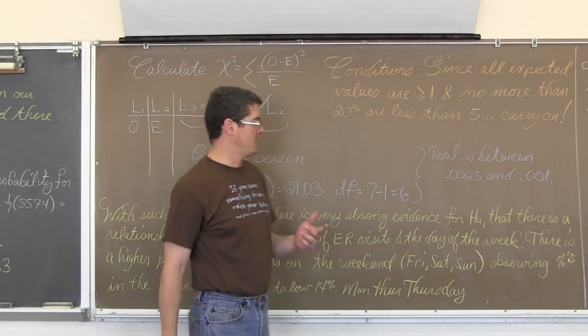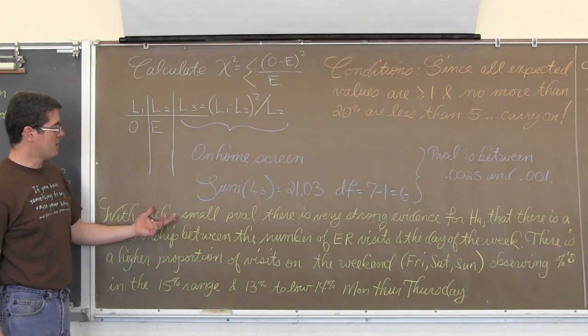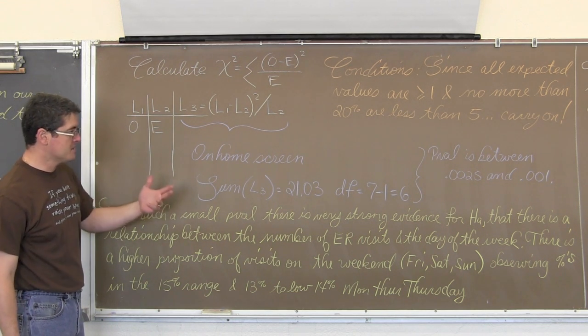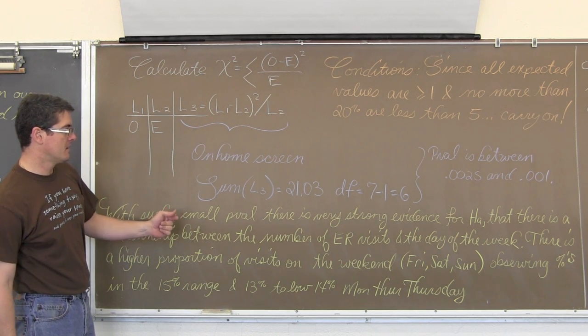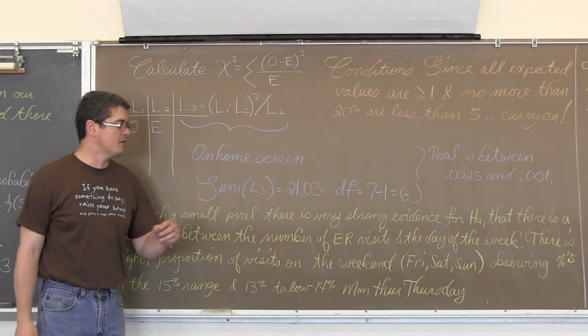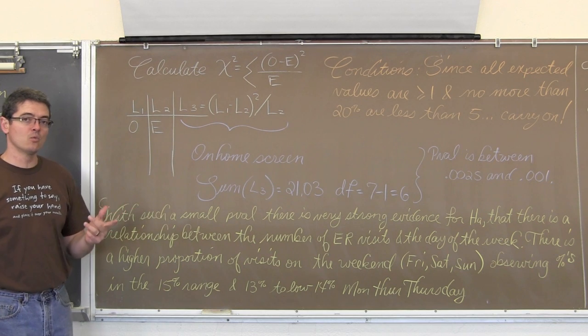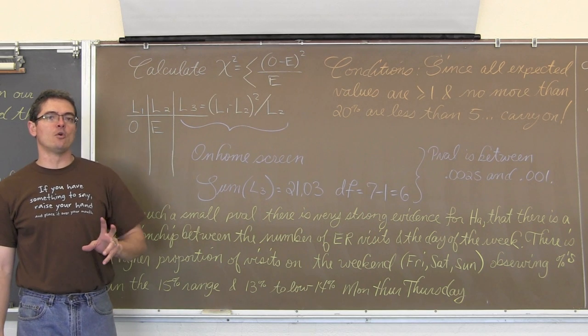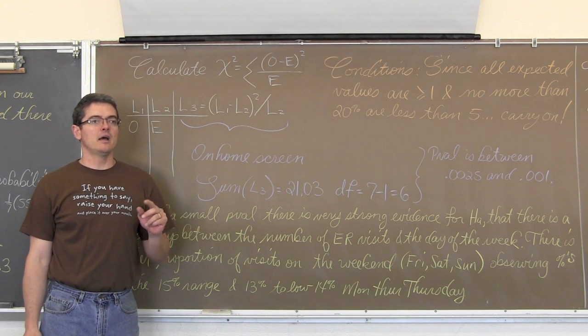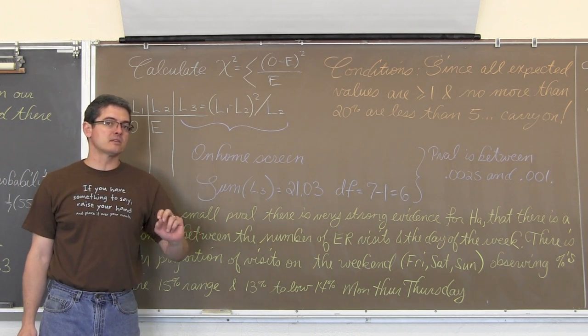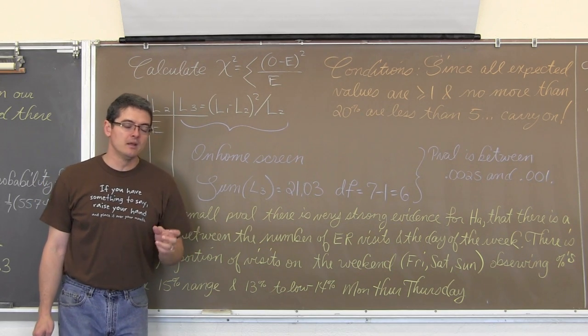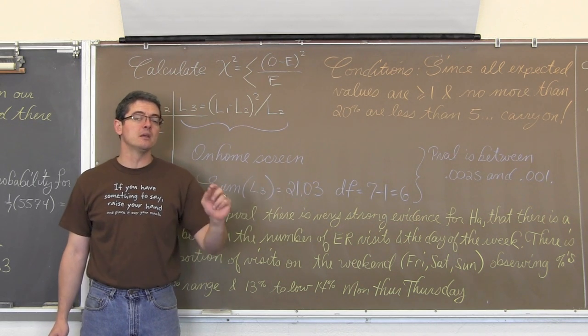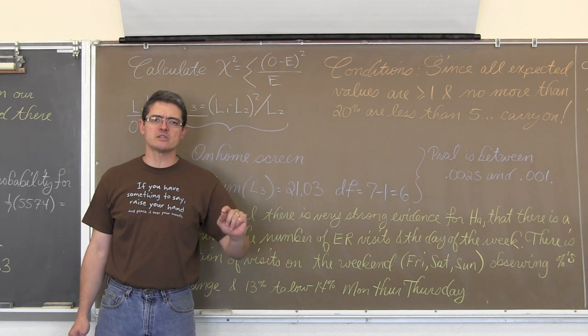So our conclusion is going to be with such a small p-value there is very strong evidence for H sub a. That means that there is a relationship between the number of ER visits and the day of the week. Now notice I did not describe what the relationship was. With chi-square you are just looking for is there an association or not. H sub 0 is that there is not. H sub a is that there is a relationship. Or again, H sub 0 does the observed population fit the hypothesized population distribution. Or H sub a does it not. It is not so specific.